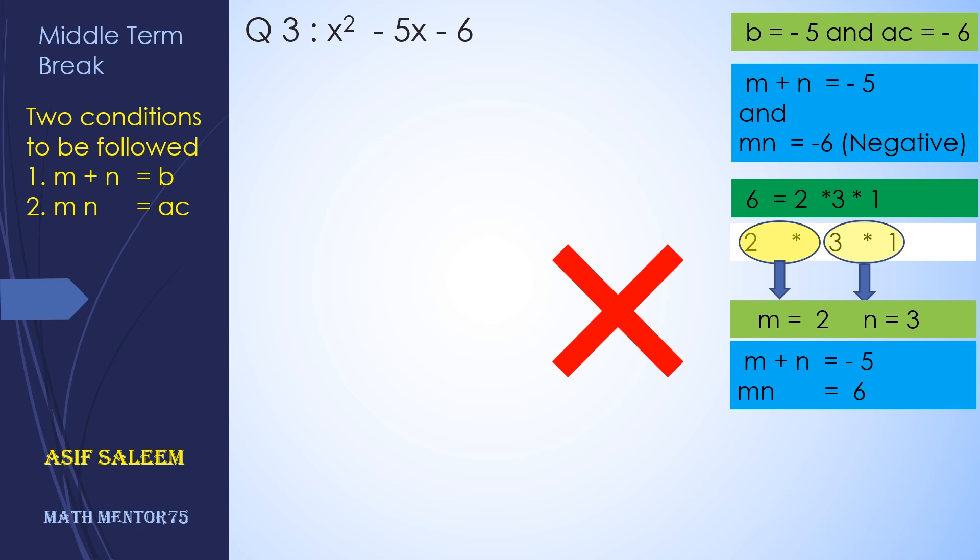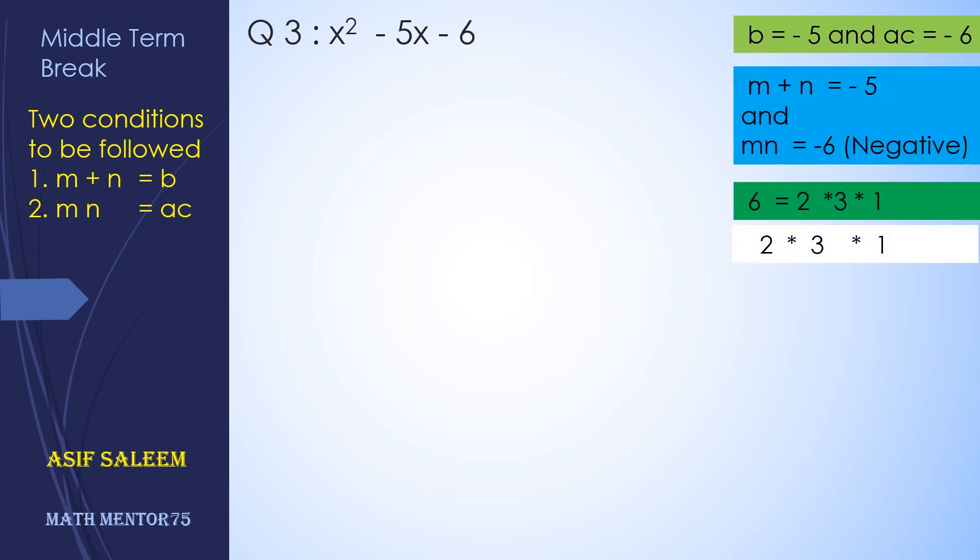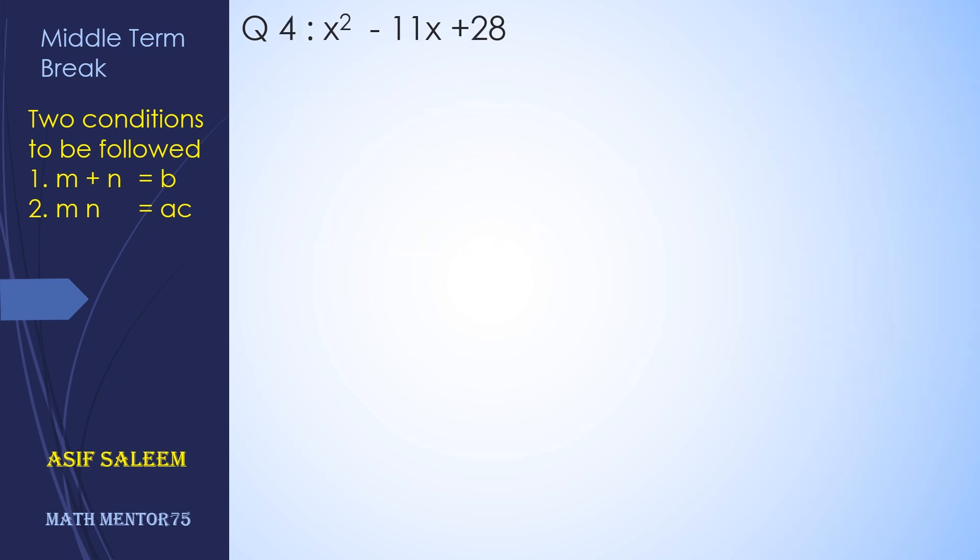We have to rearrange. This is not the right choice. Let's consider again. Now let's group them differently: 2 × 3 in the first group, 1 in the second group. So m is 6 and n is 1. As mn is negative, it means we have to subtract so that the answer is minus 5, so we attach negative with 6. Now let's apply our condition: m + n is minus 5 and mn is minus 6. Yes, now we can factorize. Substitute the values: m is minus 6 and n is 1.